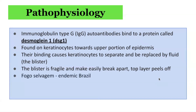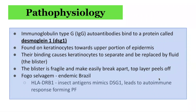In the endemic form of Pemphigus foliaceus, Fogo Selvagem, there is also a genetic susceptibility. People who have HLA-DRB1, when bitten by specific strains of insects, have insect antigens that can mimic DSG1, which leads to the formation of autoantibodies that attack DSG1 in the skin, thereby creating blisters in the superficial surface layer.